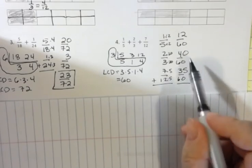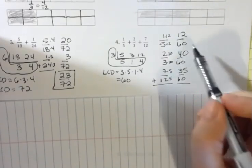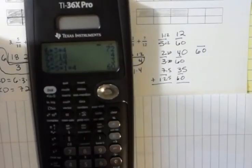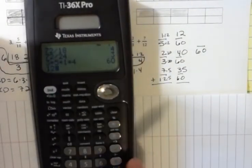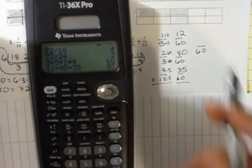So, you can divide those to find out what you have to multiply by. But now, I have a common denominator of 60. And I'm going to add my numerators. I have 12 plus 40 plus 35. And that gives me 87.